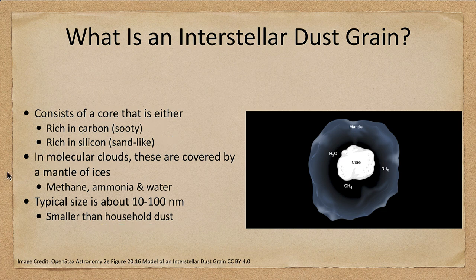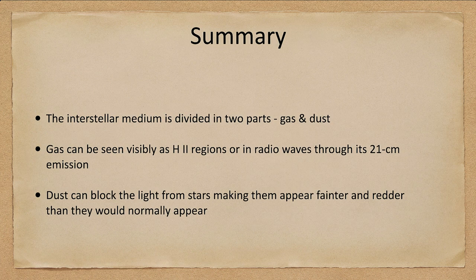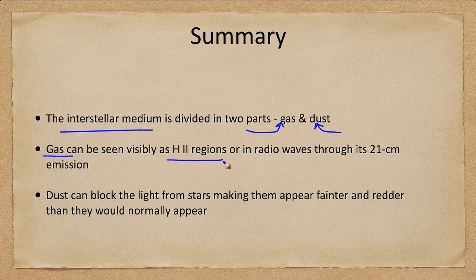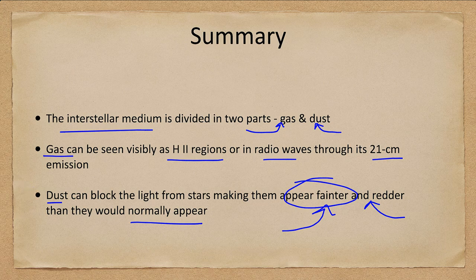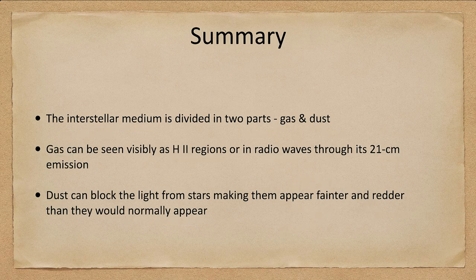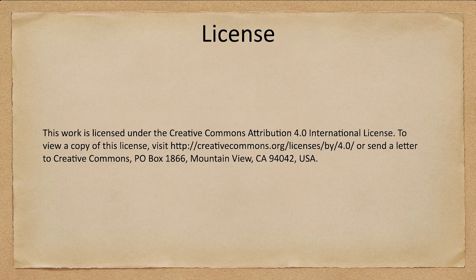Let's finish up with our summary. The interstellar medium is divided into two parts: gas and dust. The gas can be seen visibly as H II regions or in radio waves through 21 centimeter emission. Dust blocks the light from stars, making them appear fainter and redder than they would normally appear, which causes problems in determining distances if the amount of dust is not taken into account. That concludes this lecture on the interstellar medium — we'll be back next time for another topic in astronomy. Have a great day everyone, and I will see you in class.